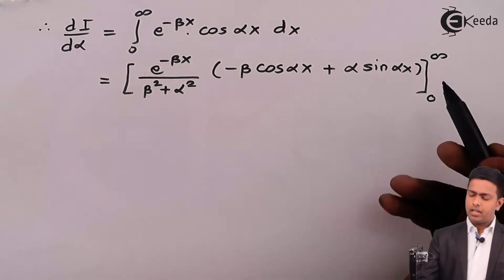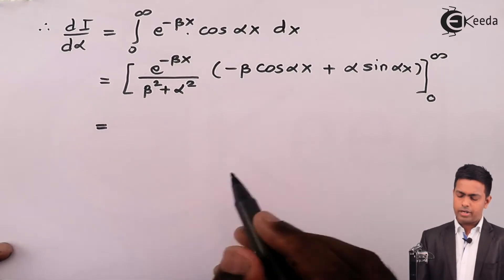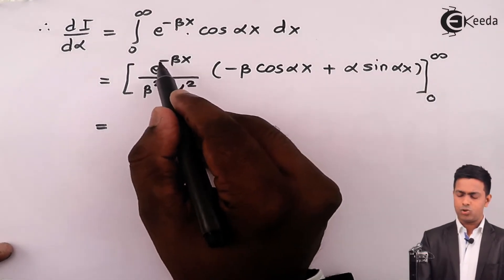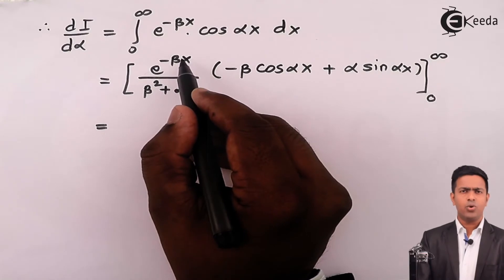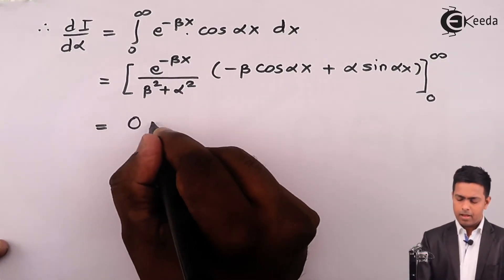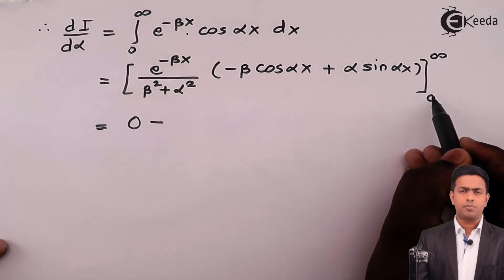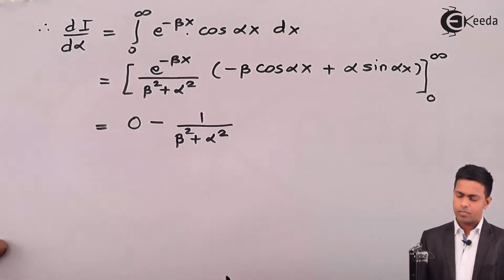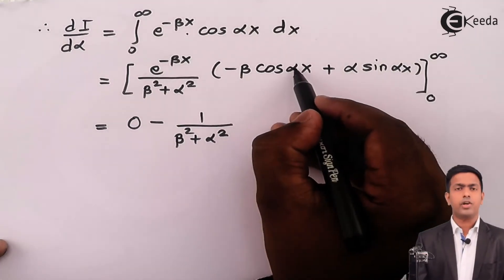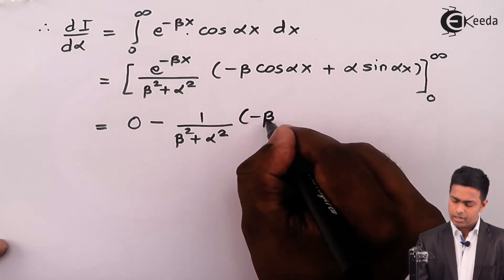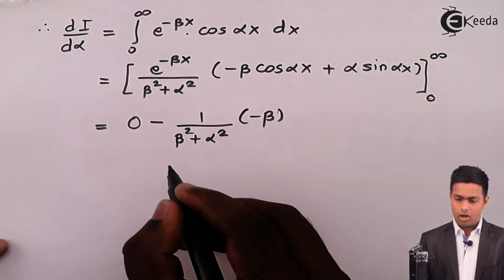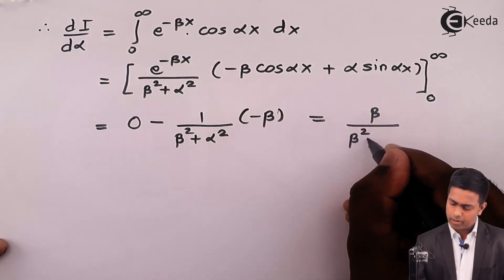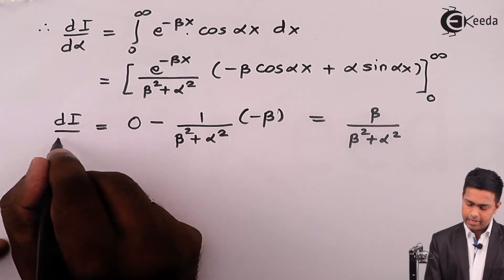Now let's apply the upper and lower limits. Substituting the upper limit as infinity: e raised to minus infinity is 0, so the whole value is 0. Substituting the lower limit 0: e raised to 0 is 1 upon (beta squared plus alpha squared). Cos(0) is 1, giving minus beta, and sin(0) is 0. So this becomes positive beta upon (beta squared plus alpha squared) as the value of dI by d alpha.